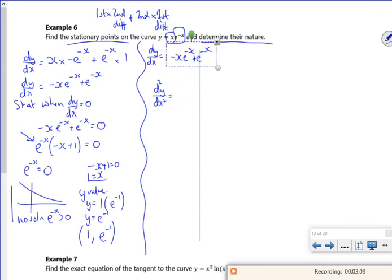Right, so for this bit, I've actually got product rule again. So first bit times by second bit differentiated plus second bit times by first bit differentiated. So that's my product rule.